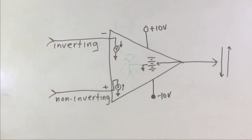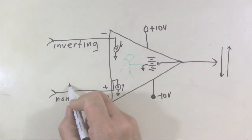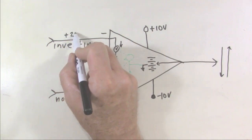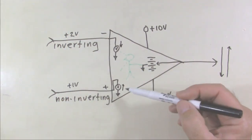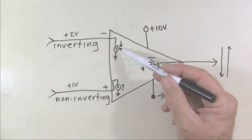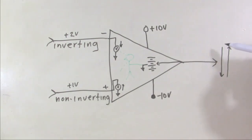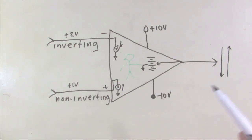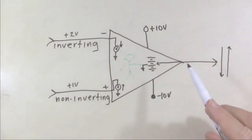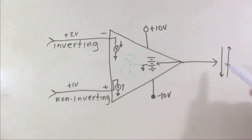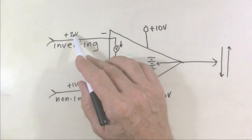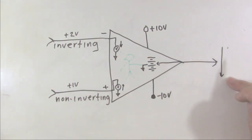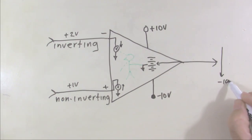Let's put some real voltages here — plus 1 volt at the non-inverting input and plus 2 volts at the inverting input. He sees 1 volt and 2 volts. The voltage at the inverting input is higher than the voltage at the non-inverting input, so he's going to crank his voltage down. There's nothing connecting the output to the input, so nothing he does to this battery is going to change what happens at the inputs. The output voltage is going to be cranked downwards and keep going down until he hits his bottom limit, which is going to be minus 10 volts. Sorry boss, that's as far as I can go.